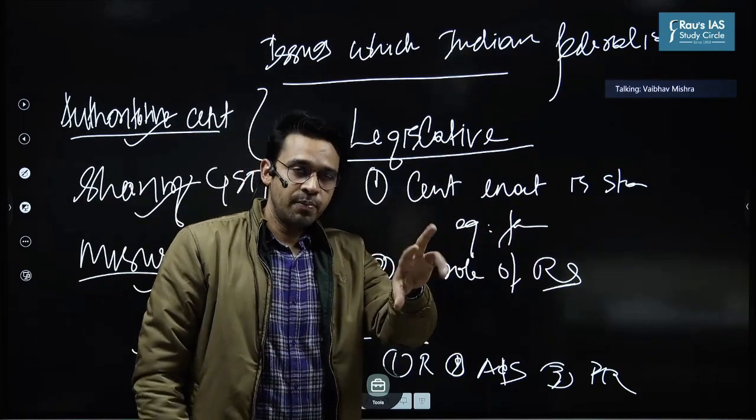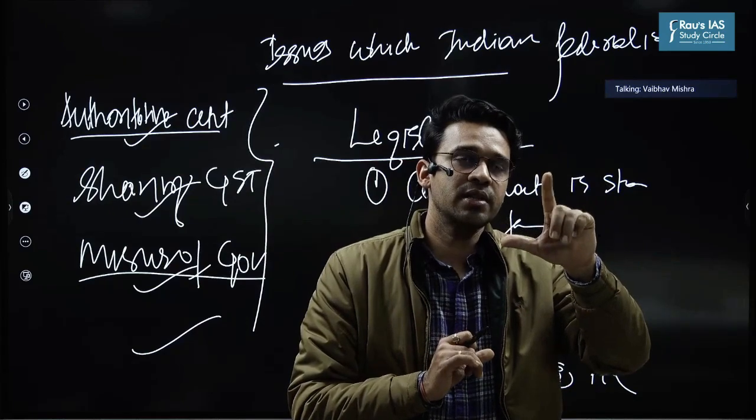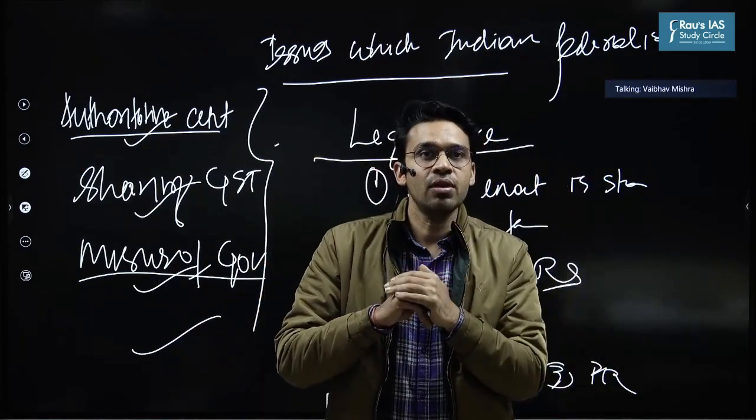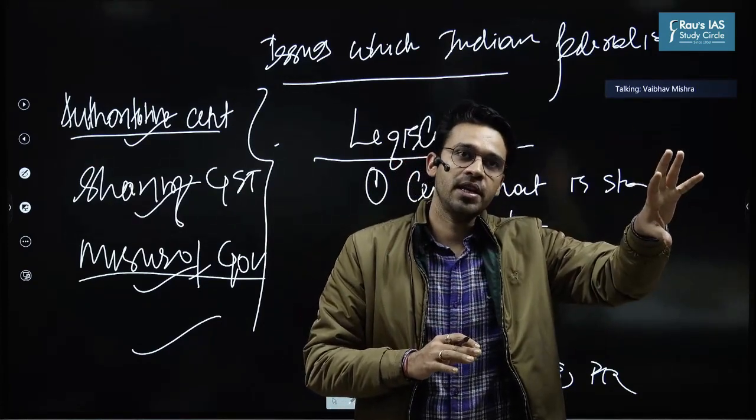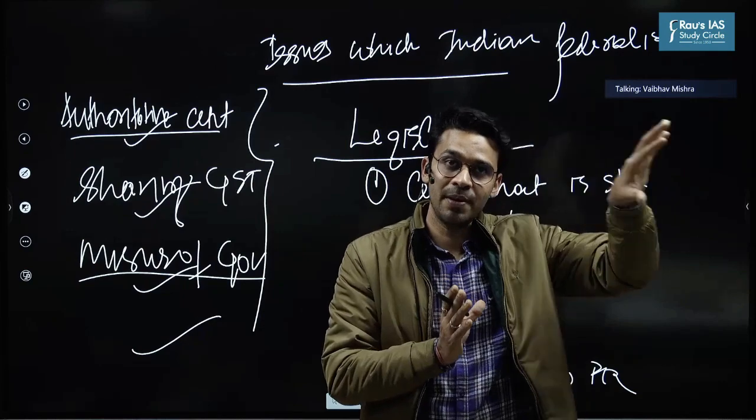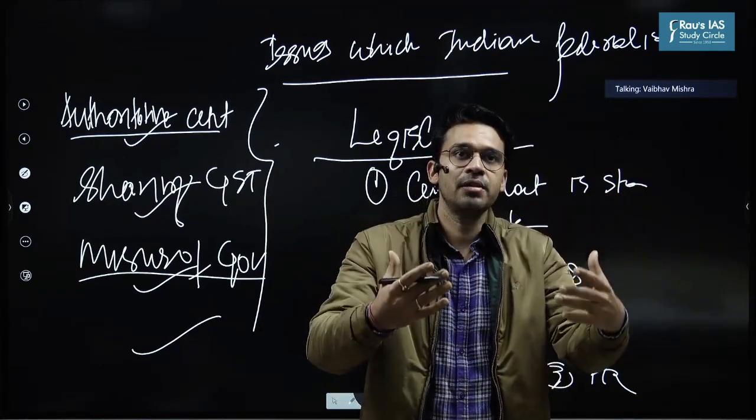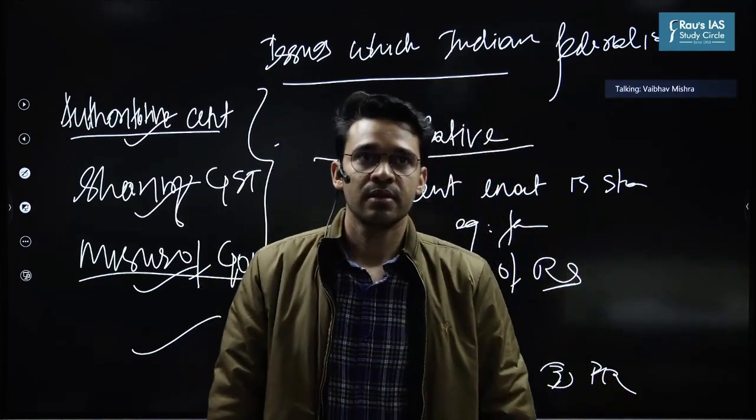Then that person underlines this legislative matter, then moves on to executive matter and then talks about role of governor, role of all India services, then talks about imposition of president's rule. Then moves on to financial issues and writes about GST compensation, then writes about article 280 and lack of representation of the state government in the terms of references of finance commission. So the point which I'm trying to make over here is that this answer has legislative matter then executive matter then financial matter. Is this point correct?